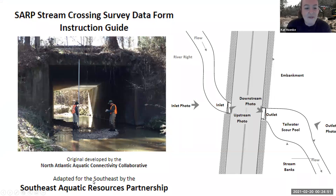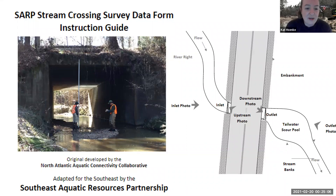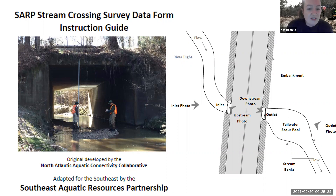In order to identify where these problem structures are, SARP has been working together with the North Atlantic Aquatic Activity Collaborative by adopting a standardized protocol to take measurements at these structures and identify whether or not they're barriers. Not every road stream crossing is going to be a problem — many are embedded and passable by organisms. We need to go to each of these crossings and figure out whether or not they're problems, and our stream crossing survey data form and instruction guide helps us assess each one for aquatic organism passage.